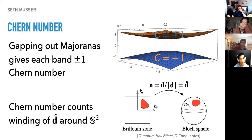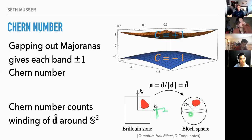The reason I've focused on this form is because when we gap out the bands, we give each band a Chern number. The Chern number counts the windings of this unit vector. We have a mapping from the Brillouin zone — a torus under periodic boundary conditions — to a sphere, and we count the winding around the origin. After gapping out, one band will have a Chern number of minus one and the other plus one.